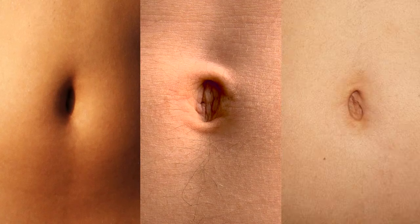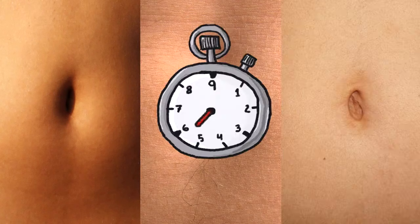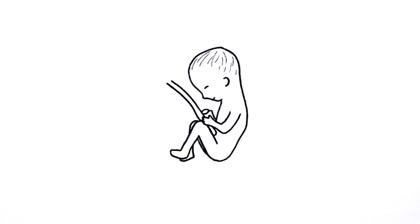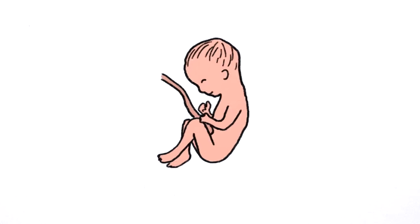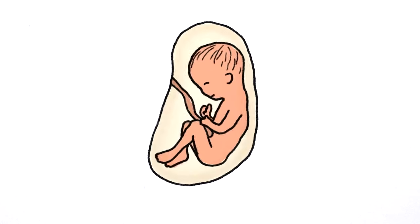The little scar in the middle of your abdomen marks the place where, for about nine glorious months, all the nutrients you needed to grow and develop and survive flowed straight into your bloodstream while you just floated around in a sack of amniotic fluid.